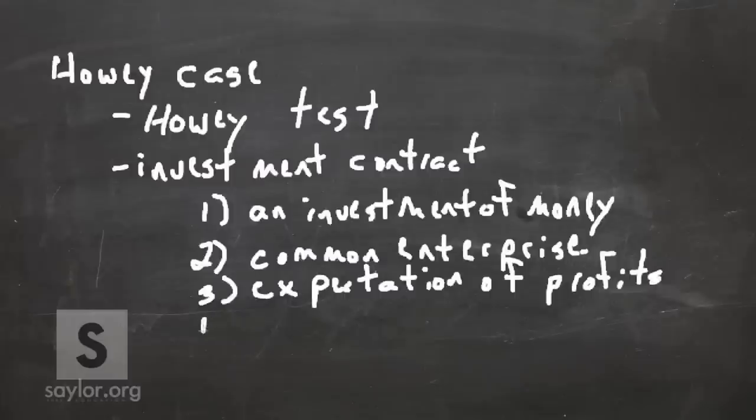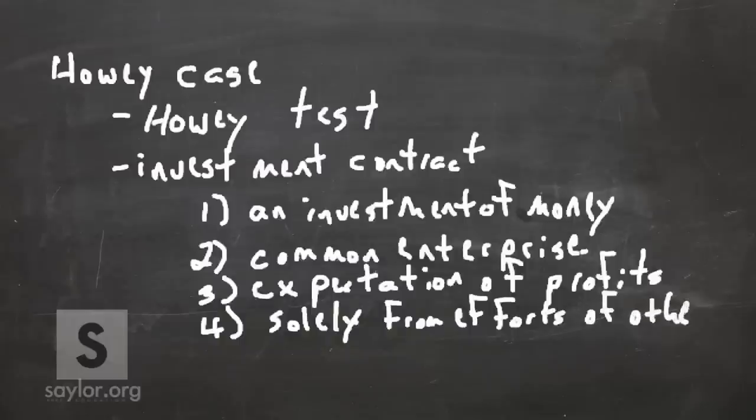And then, the fourth element was that the profits have to be derived solely from the efforts of others. Solely from the efforts of others. So, somebody else has control here. So, think about that. If you look at a stock or bond, and you're giving money over to a company, somebody else has the control of whether you're going to make money or not. So, that's essentially the Howey test. It not only defines an investment contract, but defines whatever can be a security.